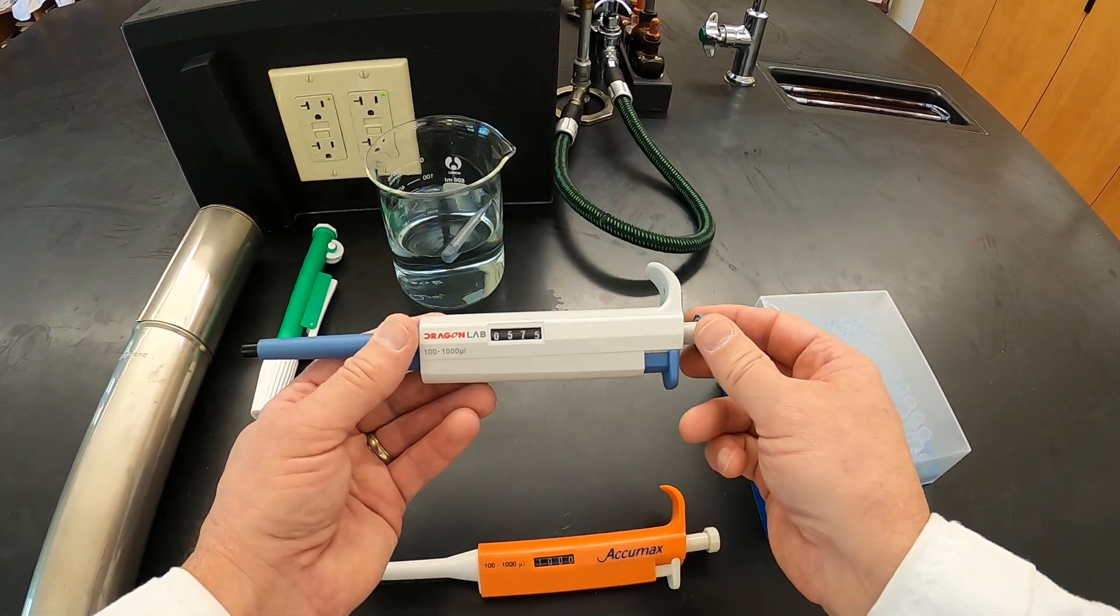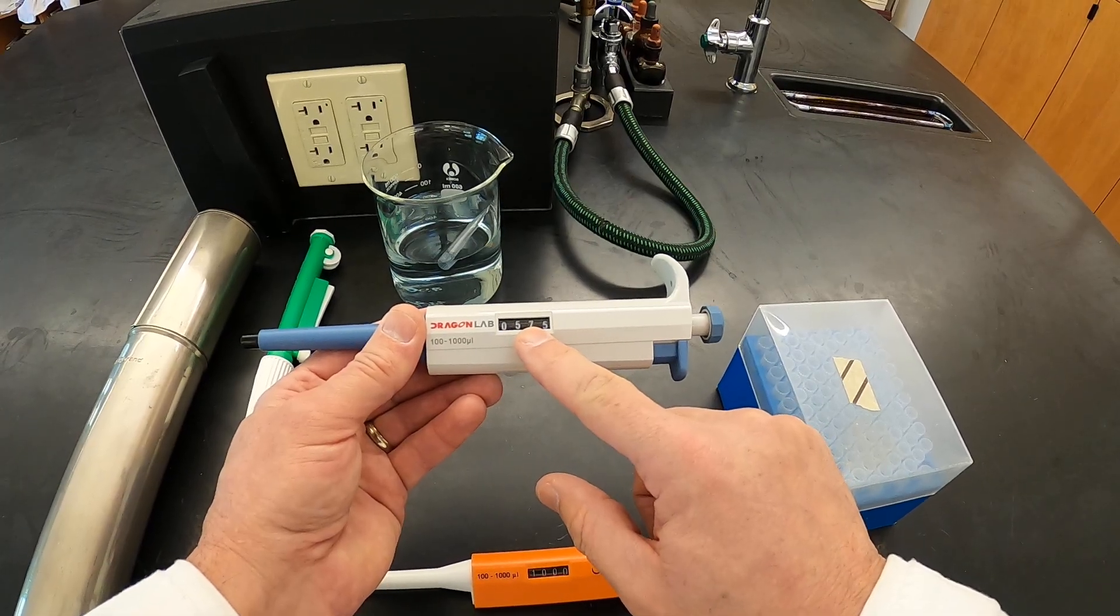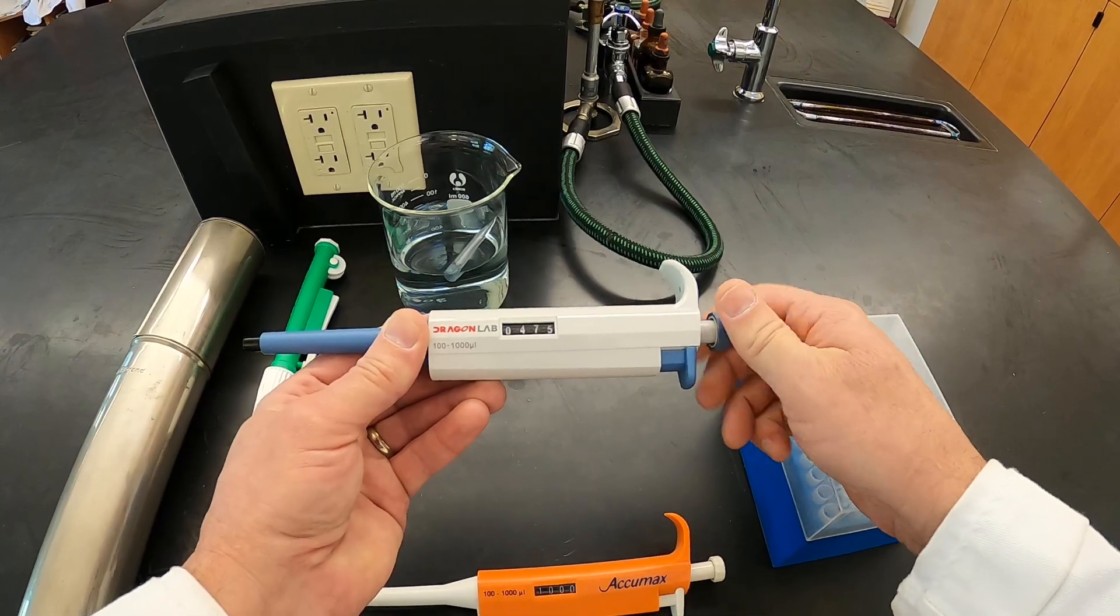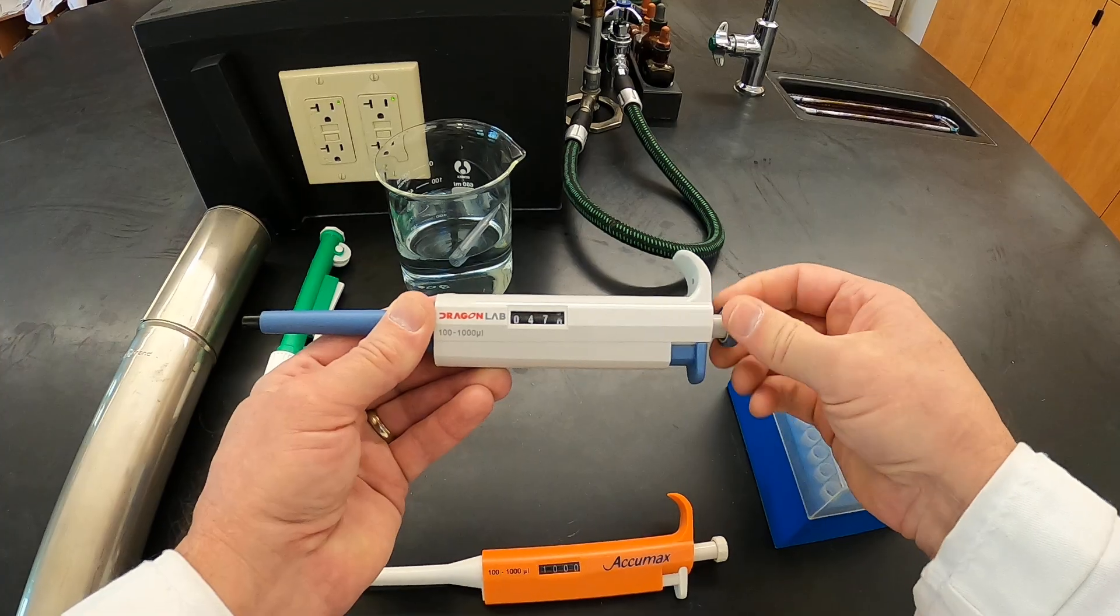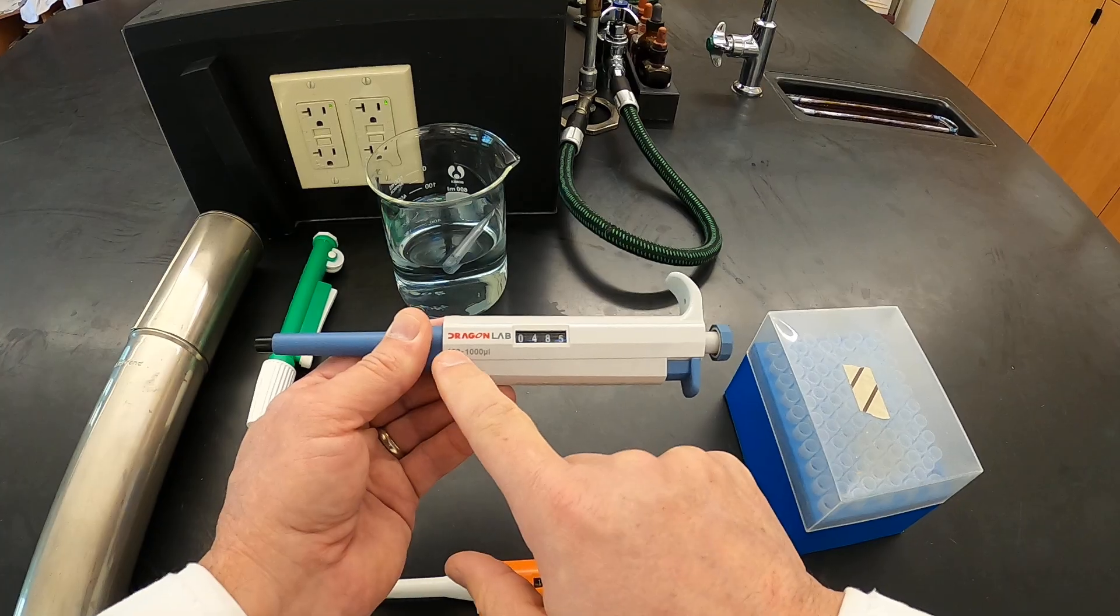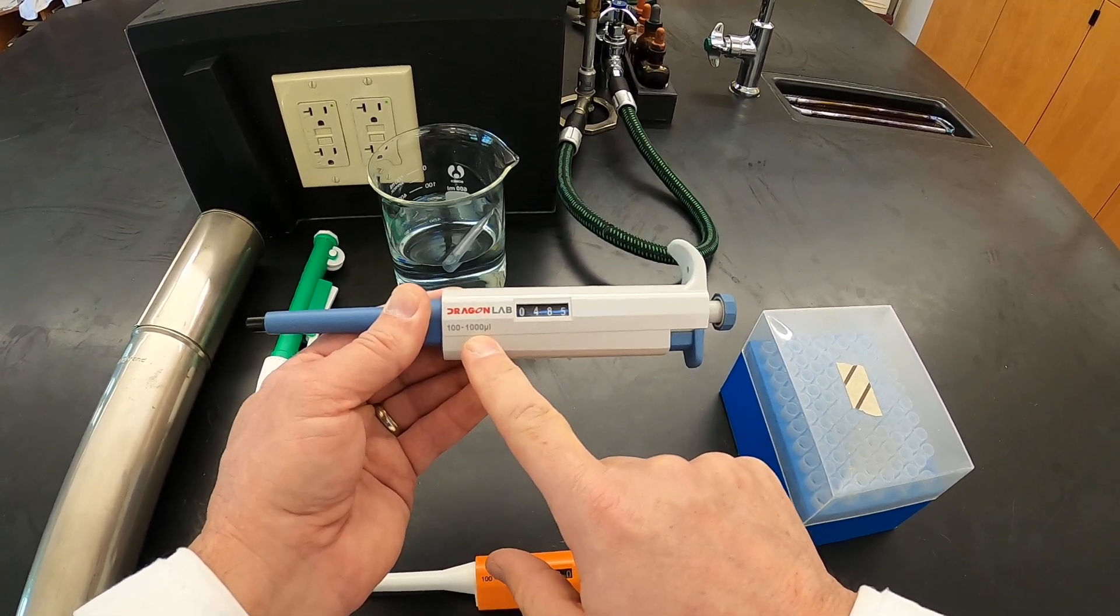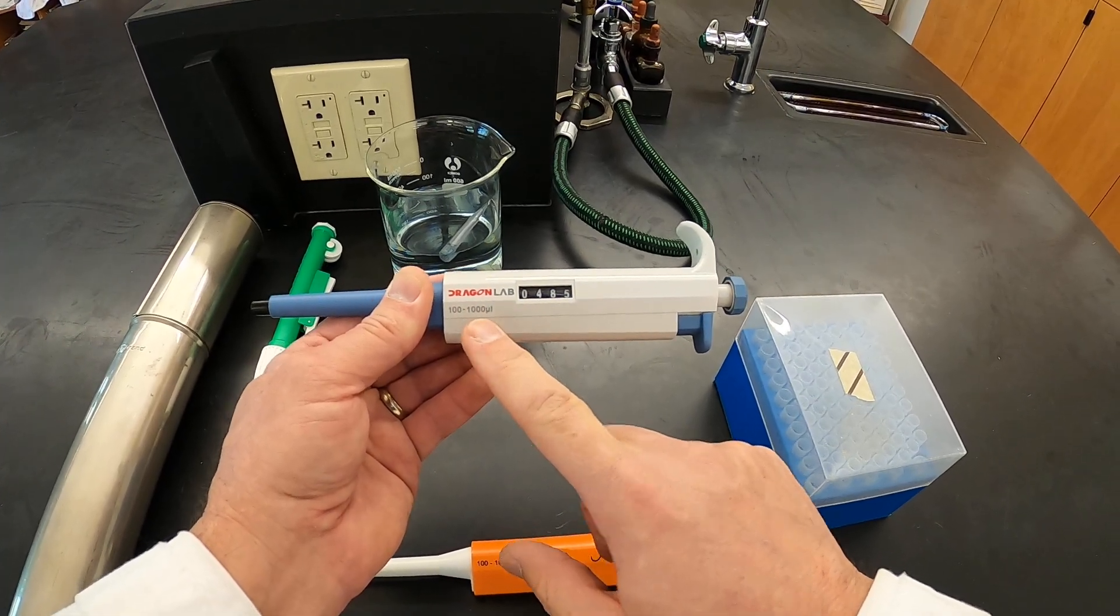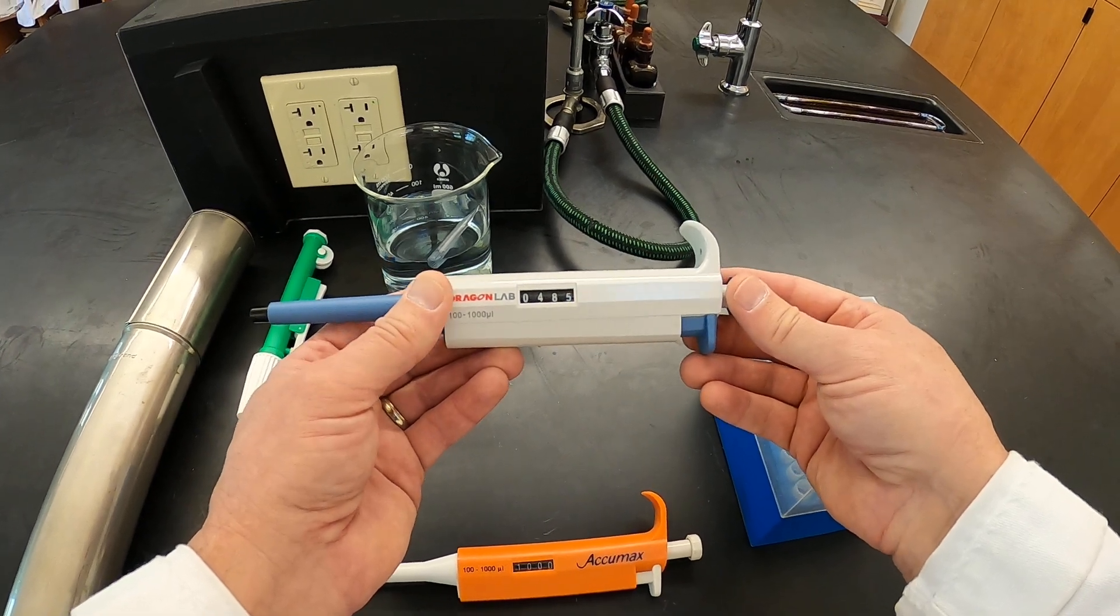The way that you adjust the values here in the window is to twist the plunger. So we can twist the plunger to decrease the volume, we can twist the plunger to increase the volume. One of the things you want to be really careful with though is to not decrease the volume below the stated minimum or above the stated maximum because you will damage the pipette. So just be very careful to make sure you are not trying to set the pipette outside its minimum or maximum range.